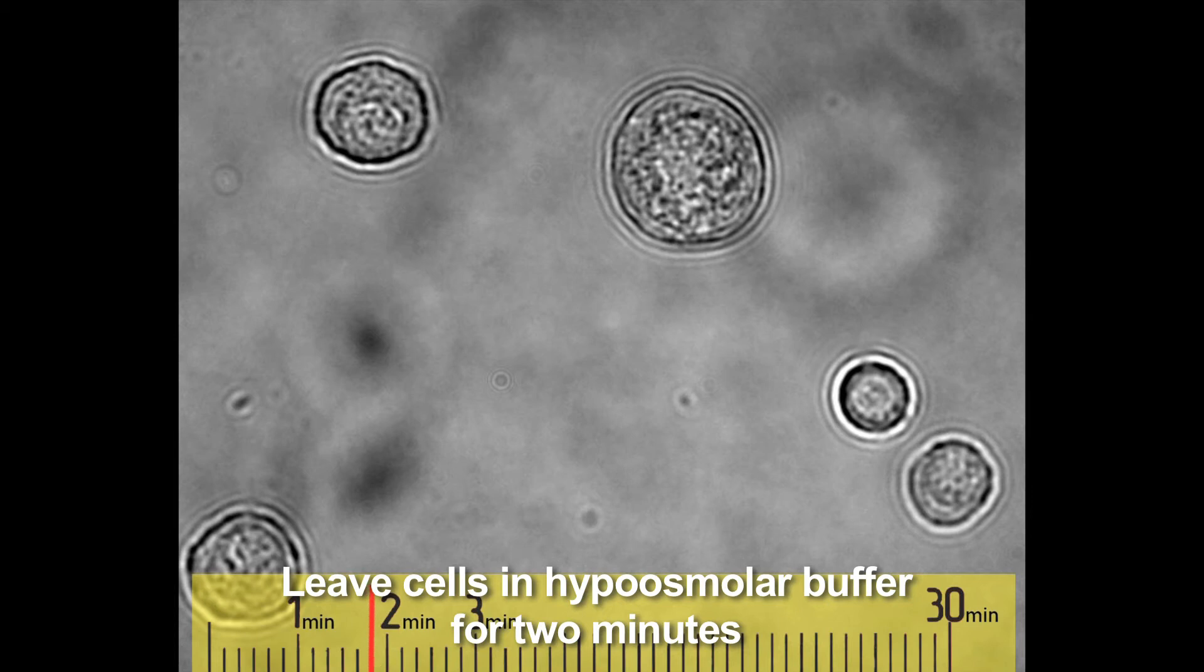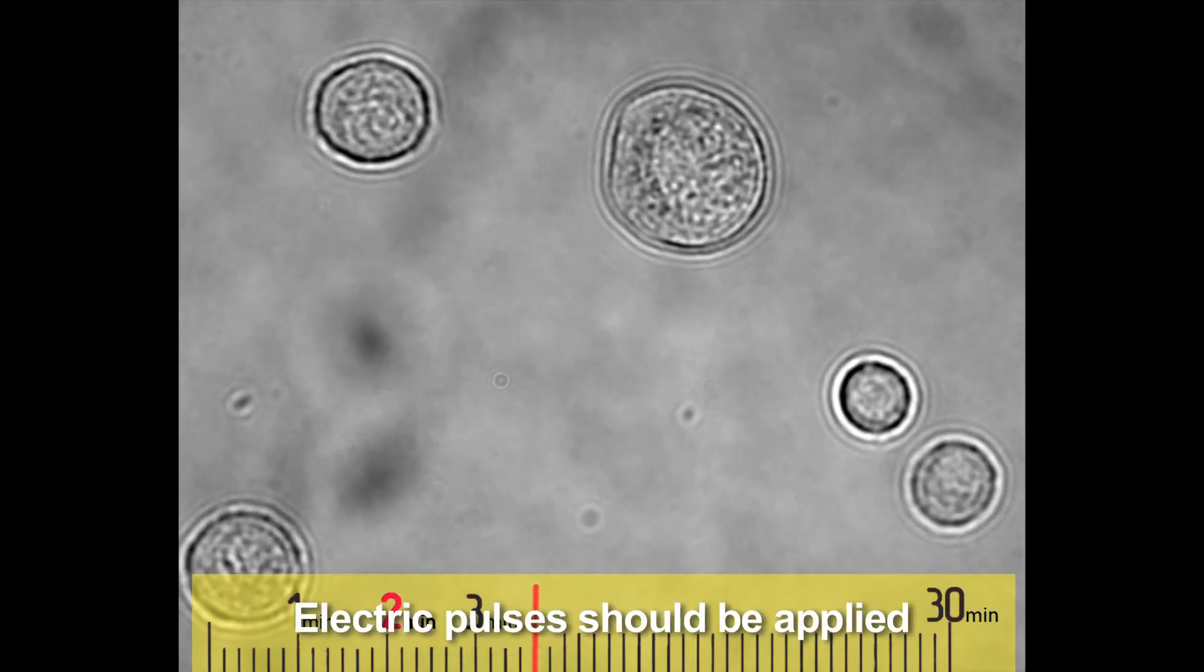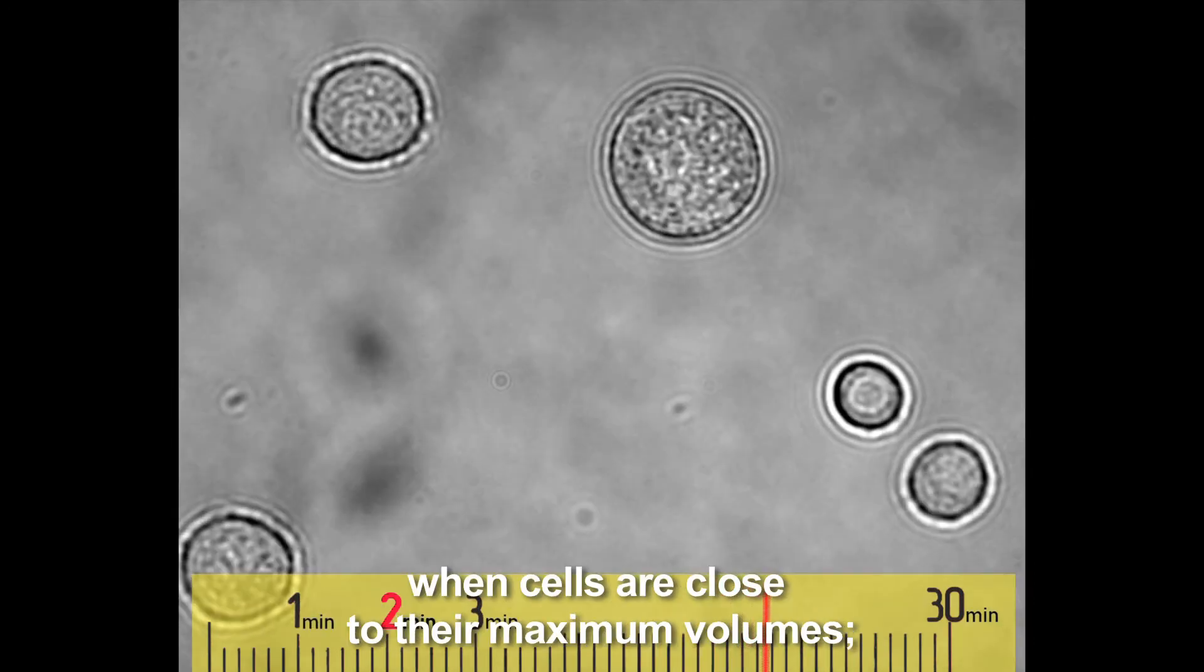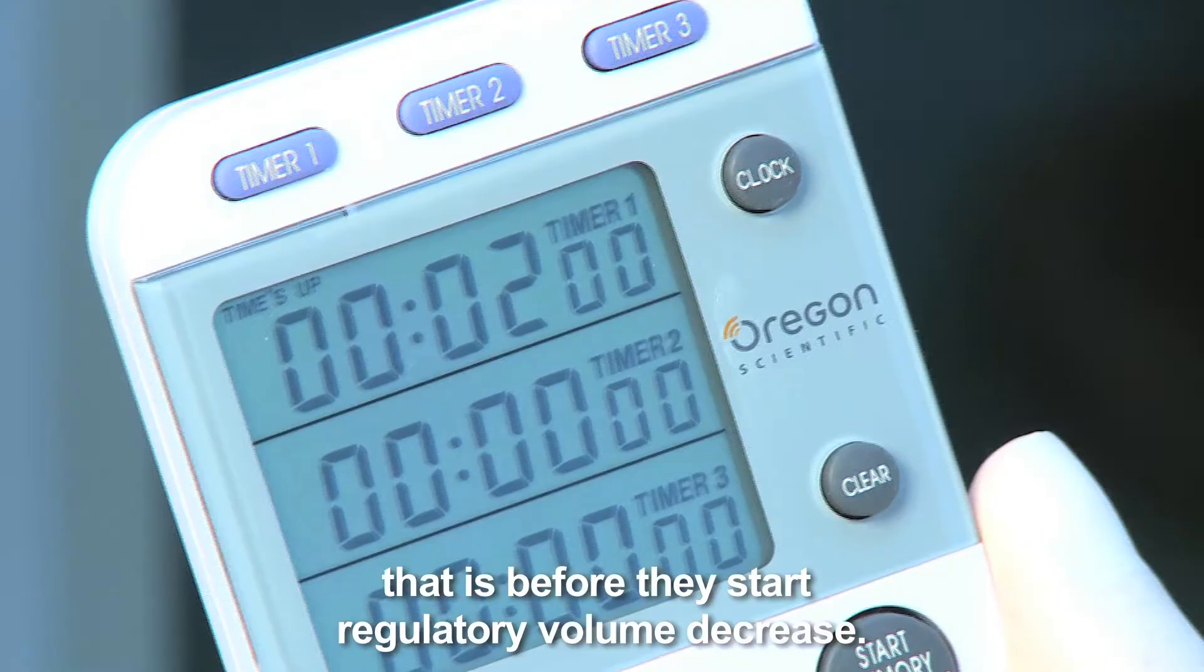Leave cells in hypoosmolar buffer for 2 minutes before applying electric pulses. Electric pulses should be applied when cells are close to their maximum volumes, that is, before they start regulatory volume decrease.